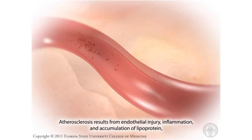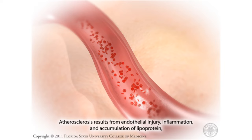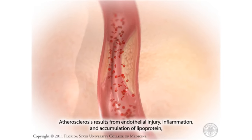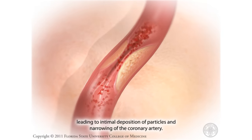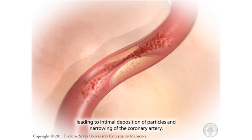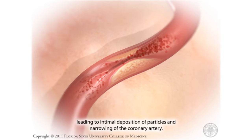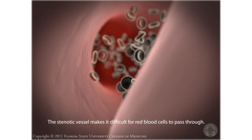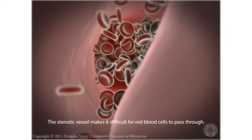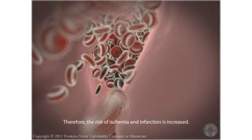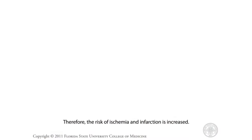Atherosclerosis results from endothelial injury, inflammation, and accumulation of lipoprotein, leading to intimal deposition of particles and narrowing of the coronary artery. The stenotic vessel makes it difficult for red blood cells to pass through. Therefore, the risk of ischemia and infarction is increased.